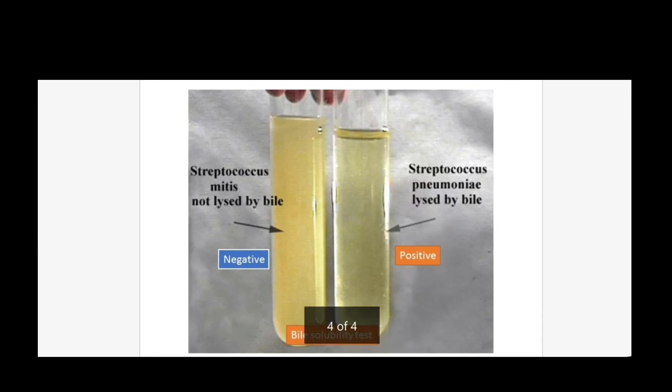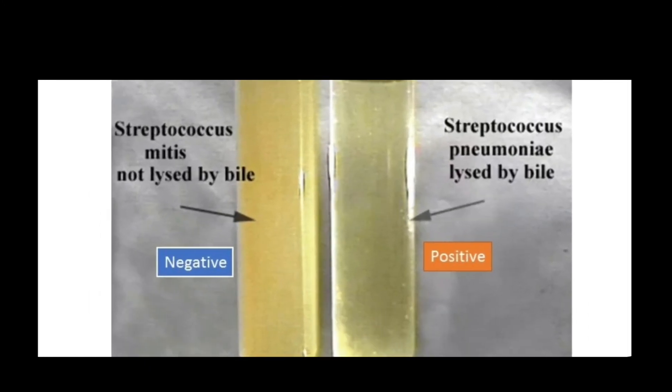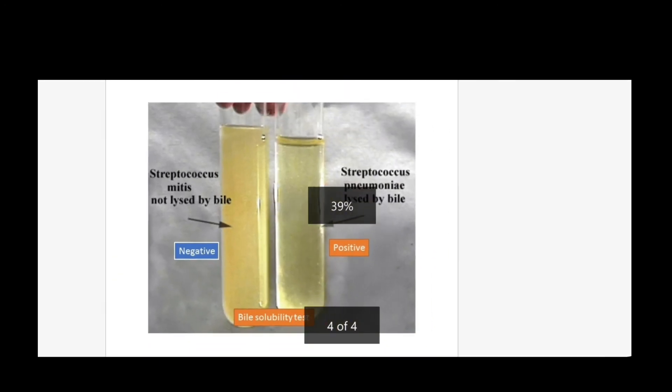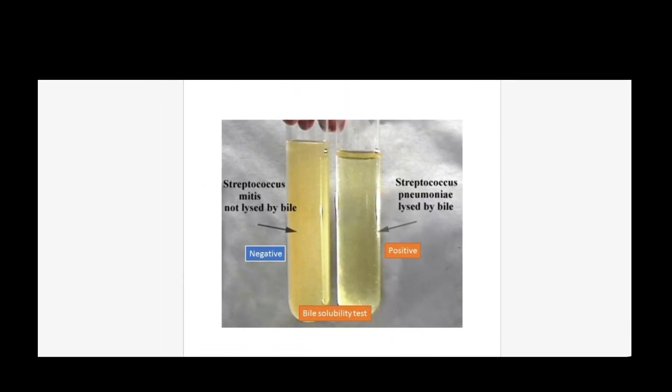So positive result means Streptococcus pneumoniae is present, and no clearing of turbidity means negative — Streptococcus pneumoniae absent.